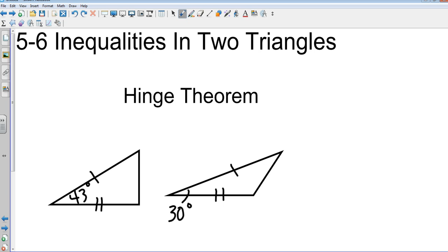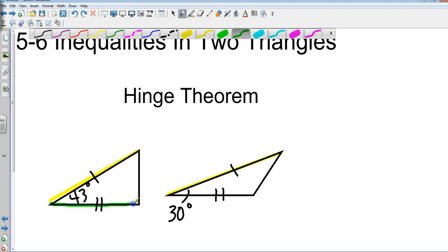Here's what the hinge theorem says. Think of it like the hinge on a gate. If I have corresponding sides that are congruent, I'll draw these in yellow. It's telling me that this side is congruent to this side. It's also telling me, and I'll draw this one in green, that this side is congruent to this side.